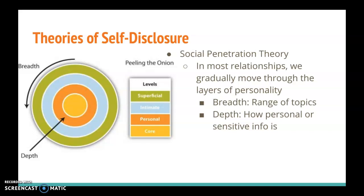Different relationships also have different depths. The depth of information is how personal or sensitive the information is. There are four different levels of depth according to the chart that is on the page now. On the very outside layer, we have the superficial level. This is the really surface level information that we tell just about anyone about — information that we wear on our sleeves that we happily and openly share with others.